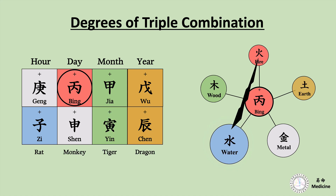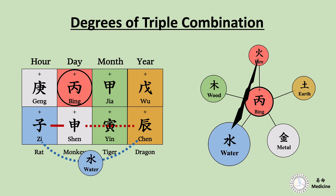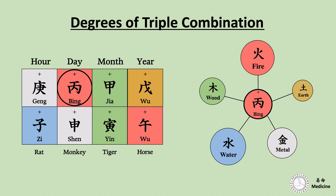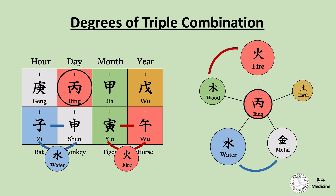And in this chart, I just switched the location of two branches. These two characters are side-by-side, but Chen Earth is a little far. So this is still considered a water triple combination, but it is incomplete. Water might still be the dominant energy, but can you see other elements now start making a balance? And if I change one branch from this chart, now there are only two branches of the water triple combination, and here are another two branches of the fire triple combination. So now this chart makes more balance between wood fire and metal water.